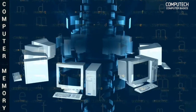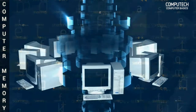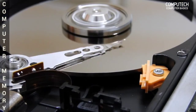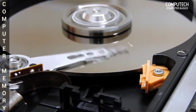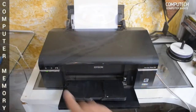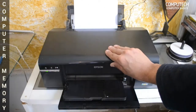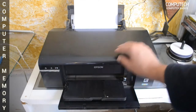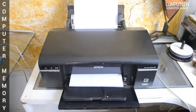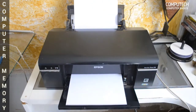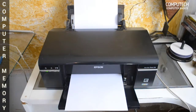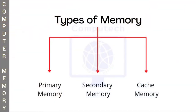Computer memory is very important because devices cannot process tasks without a memory unit. It ensures a device turns on and functions properly. In general, computer memories are of three types: primary memory, secondary memory, and cache memory.